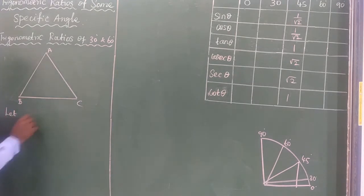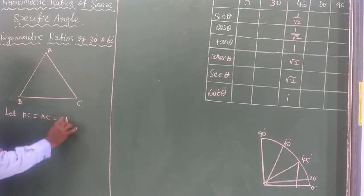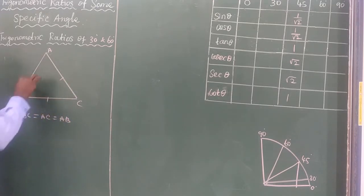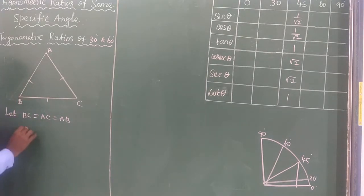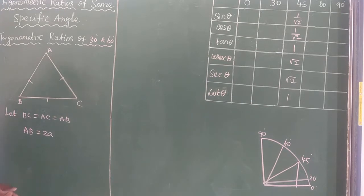I will take the side BC equal to AC equal to AB — all three sides are equal. I will choose the sides such that AB = 2A. It is a mathematical convenience, and then you will have 2 units of A.